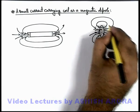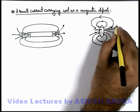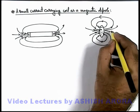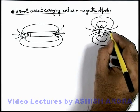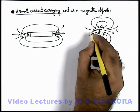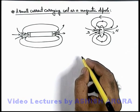And you can see the magnetic lines are similar to that of a bar magnet. This side of the coil behaves like a north pole and this side behaves like a south pole.